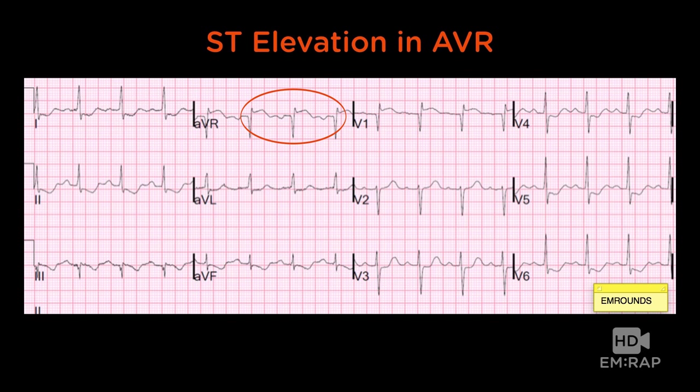ST segment elevation in aVR — we discovered this a few years ago as a really poor prognostic finding in acute coronary ischemia. If you have ST elevation in aVR with diffuse ischemia throughout the precordium, this portends a really proximal lesion and you're going to do badly. It also turns out to be true in PE: if a patient has a PE and this finding of ST elevation in aVR, it is also a very poor prognostic finding — much more mortality, much more morbidity.